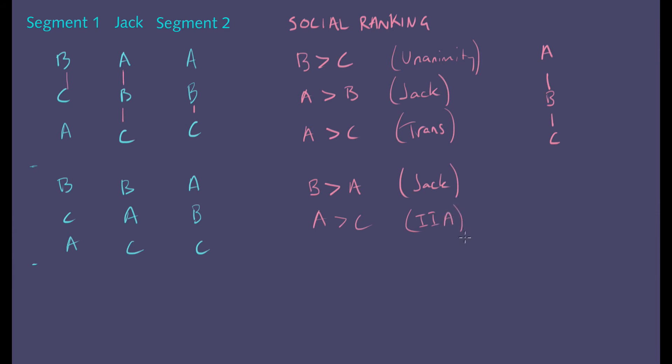And again, then we can use transitivity because if B is better than A and A is better than C, then by transitivity, B must be better than C. So we now get this ranking: B, A, C. Okay.